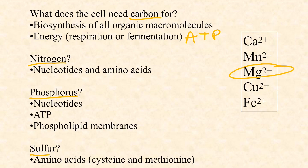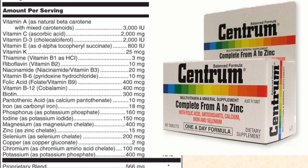Magnesium is required in large quantities, as are other common cofactor ions that support various enzymes. So the macronutrients are carbon, nitrogen, phosphorus, and sulfur — and when you get carbon, you also get hydrogen and oxygen with it, so the cell doesn't have to intentionally seek out separate hydrogen or oxygen sources. Then there are these high-quantity inorganic cofactors needed to support enzyme function.